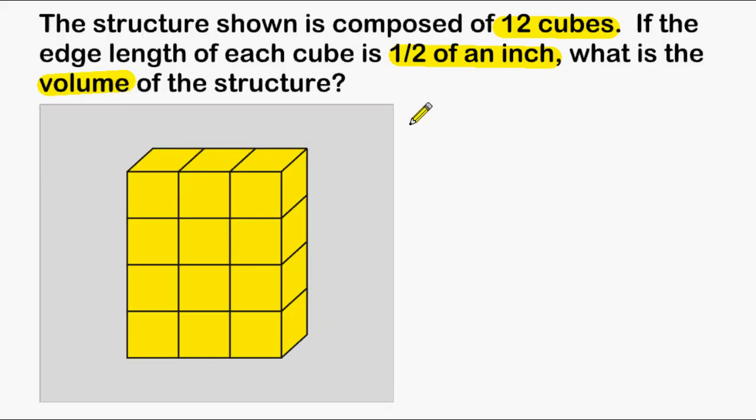The structure shown is a rectangular prism, and to find the volume of any rectangular prism, you can simply multiply the length times the width times the height of that rectangular prism.